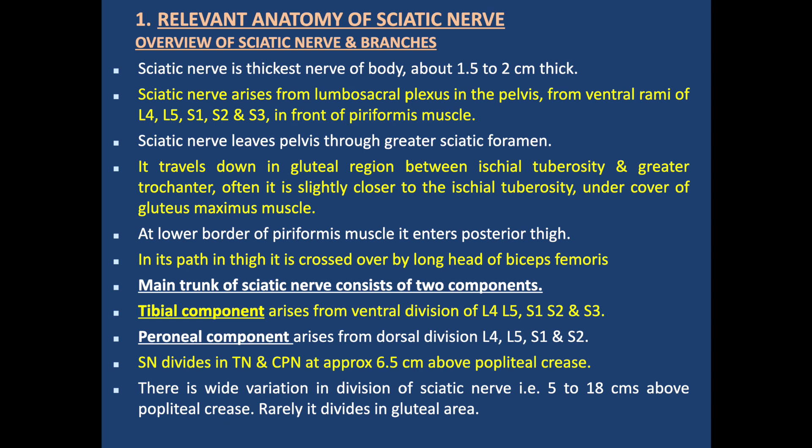In its path in the thigh, it is crossed over by the long head of the biceps femoris muscle. The main trunk of the sciatic nerve consists of two components: the tibial component and the peroneal component. The tibial component arises from the ventral division of L4, L5, S1, S2, S3. The peroneal component arises from the dorsal division of L4, L5, S1, S2. Remember, these are divisions of the ventral rami.